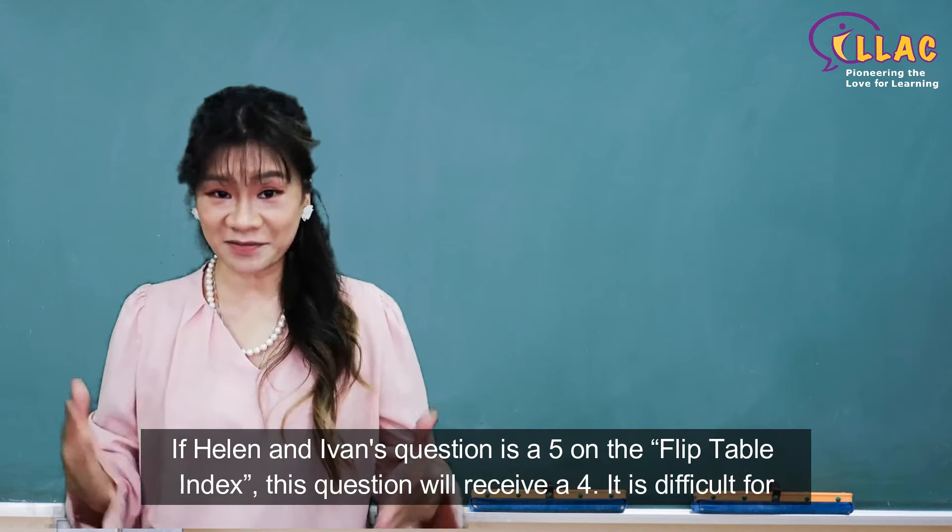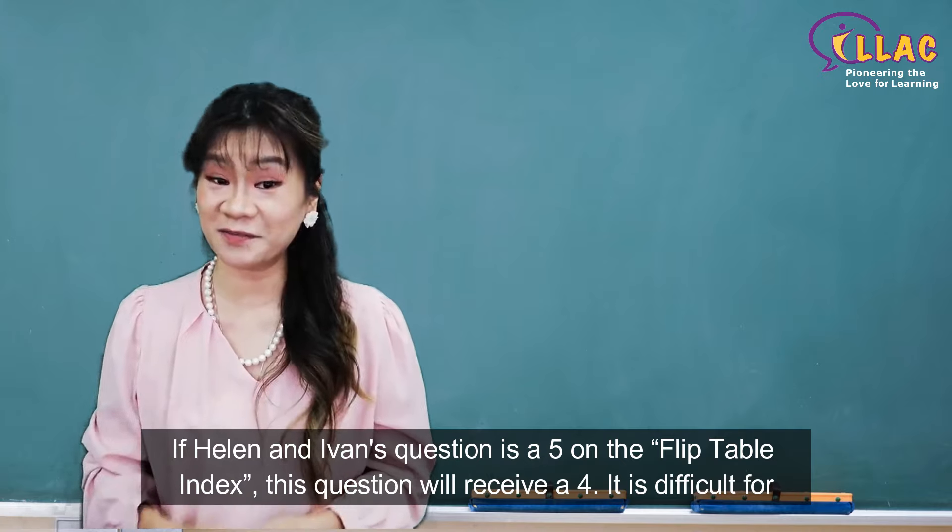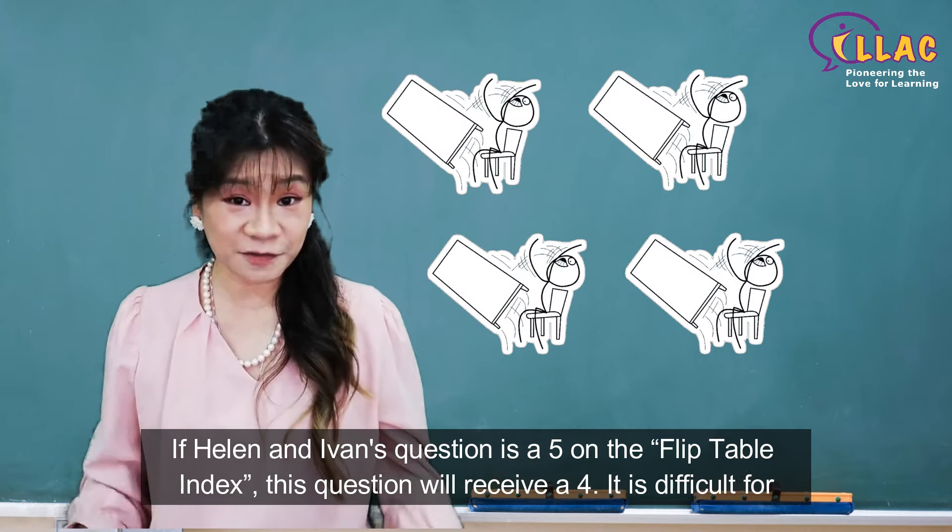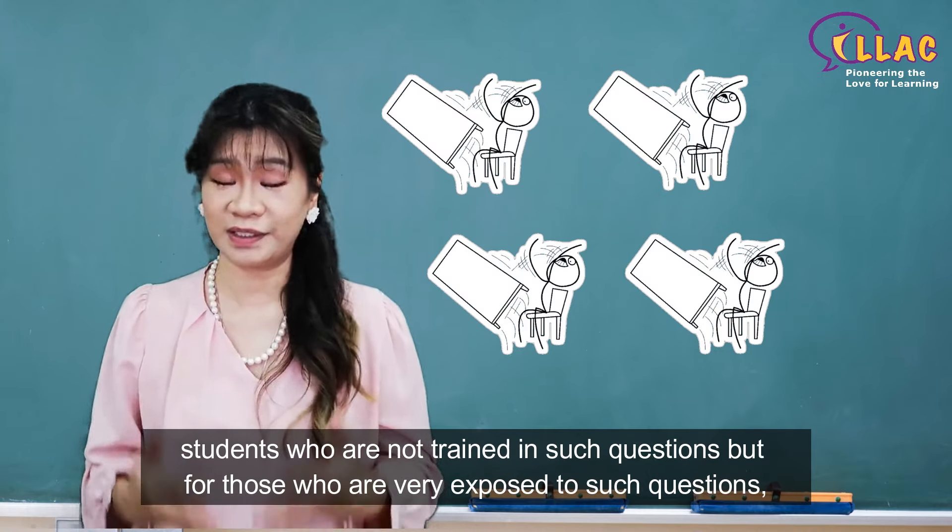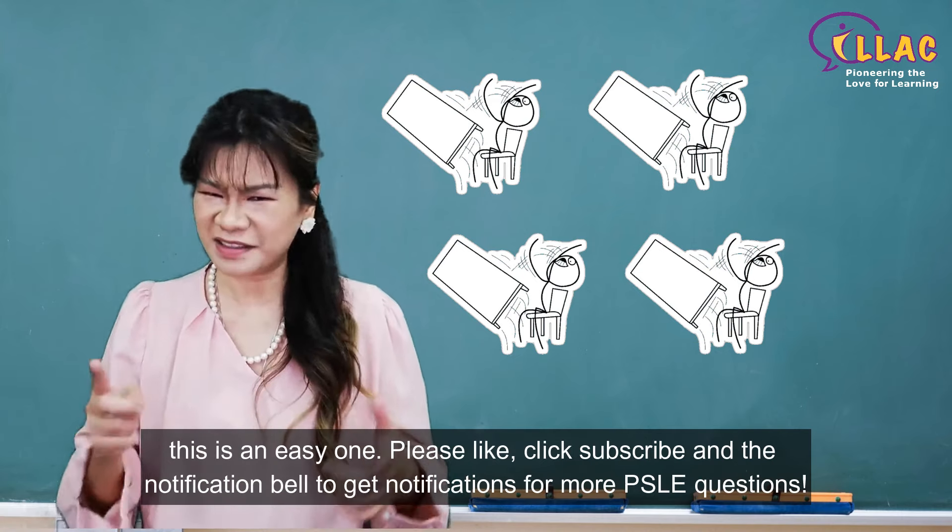If Helen and Ivan's question is a 5 on the flip table index, this question will receive a 4. It is difficult for students who are not trained in such questions, but for those who are very exposed to such questions, this is an easy one.